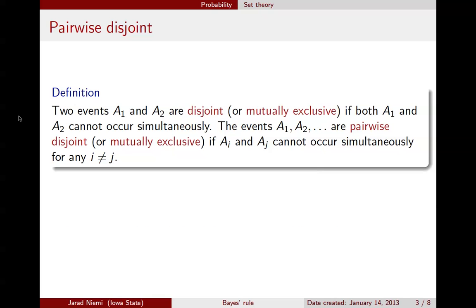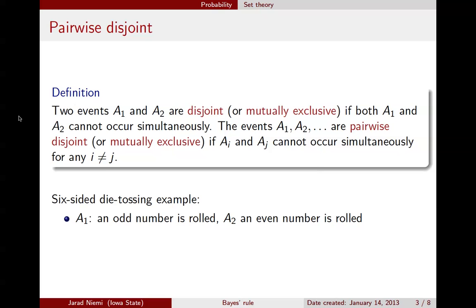In our six-sided die tossing example, two disjoint events are A1 and A2, where A1 is that an odd number is rolled, and A2 is that an even number is rolled. A pairwise disjoint set of events are A_i, where i indicates what integer was rolled. So here we have disjoint sets A1, A2, A3, A4, A5, and A6, where each set represents that number being rolled.